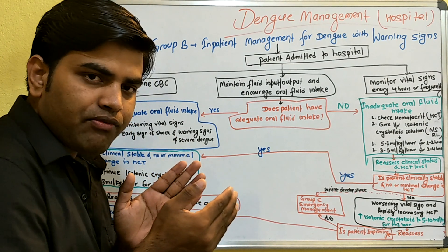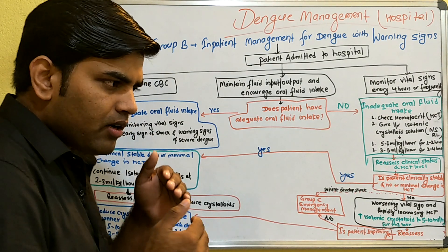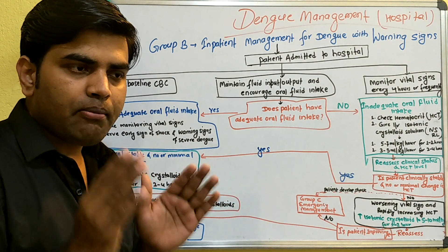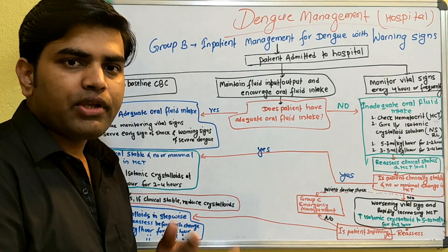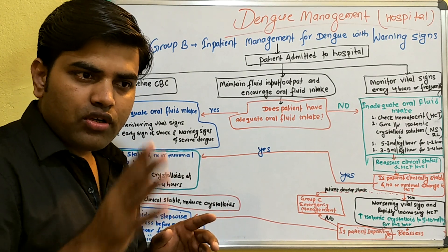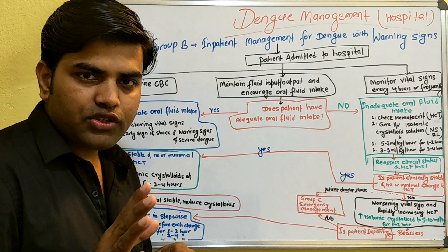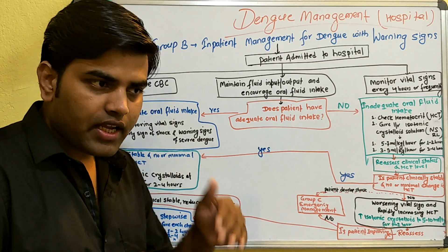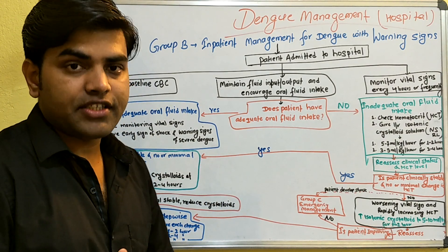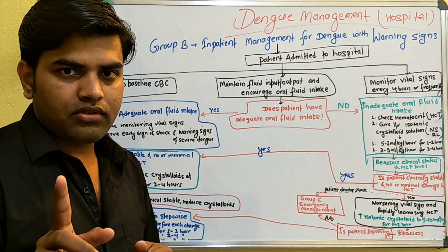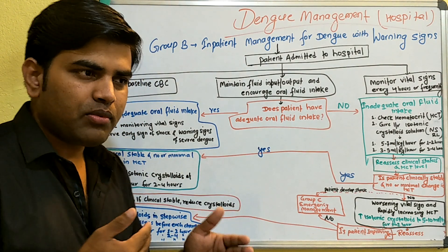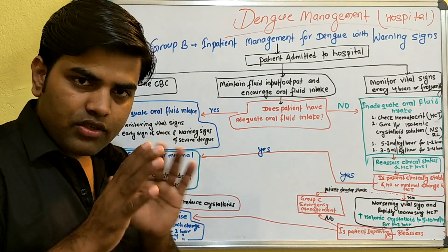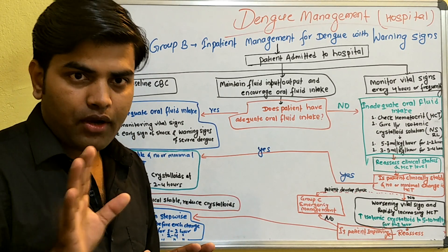For fever management, manage the fever only with paracetamol and cold sponging. Do not use aspirin, ibuprofen, or other NSAIDs, as they can cause gastric irritation and gastric bleeding. Also do not use steroids — a lot of malpractice involves doctors using steroids when nothing seems to be improving. Steroids will increase the bleeding risk.